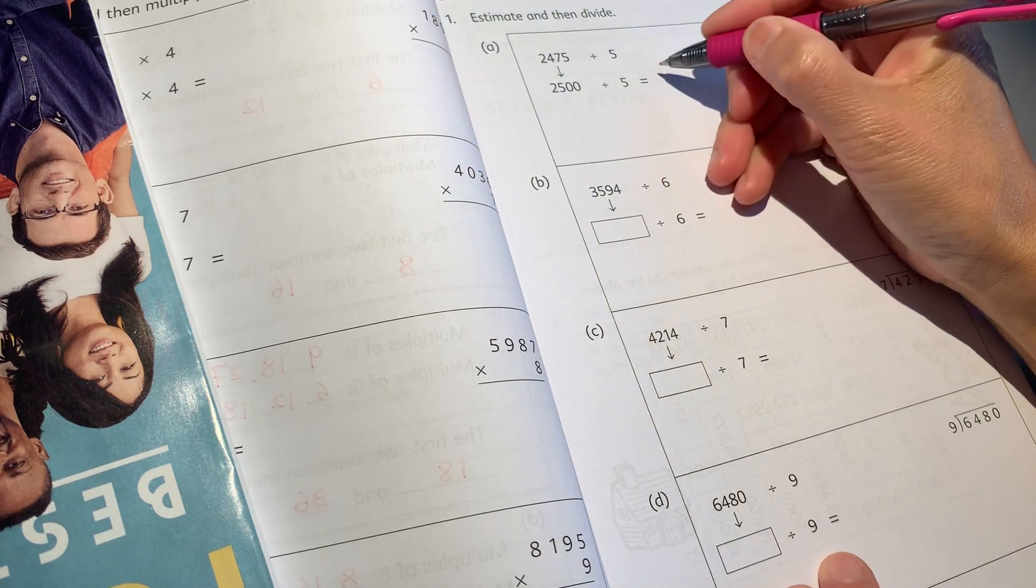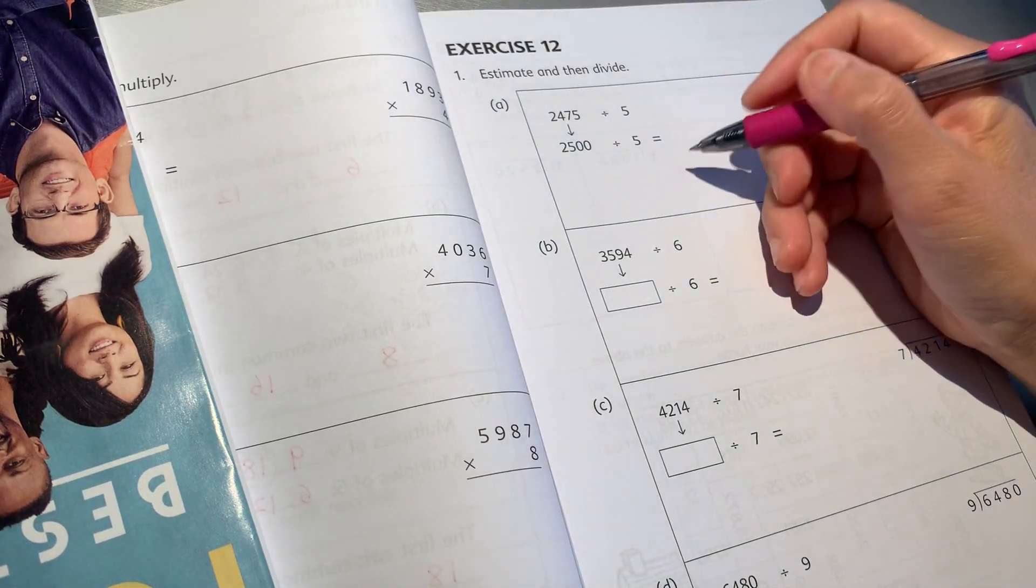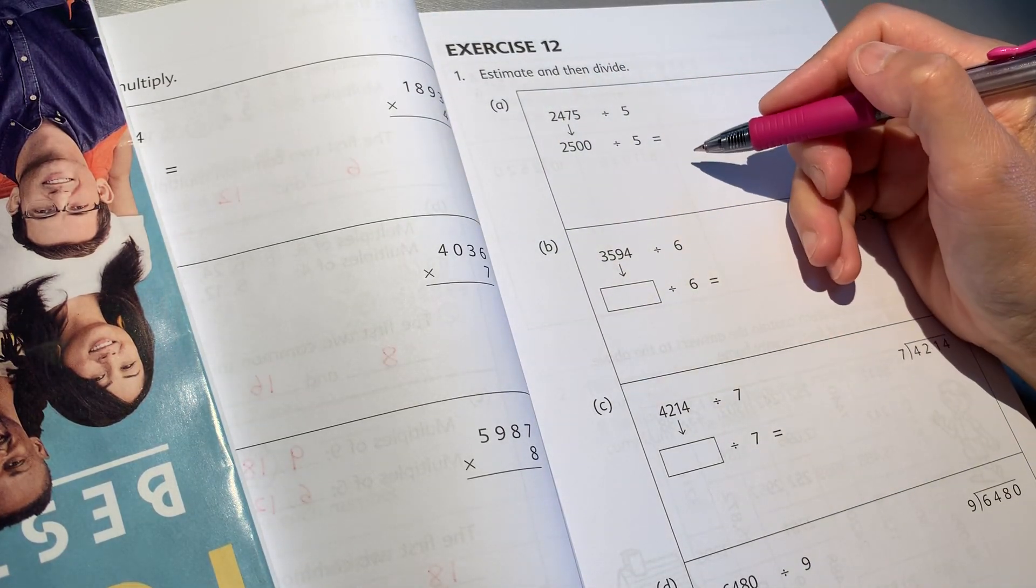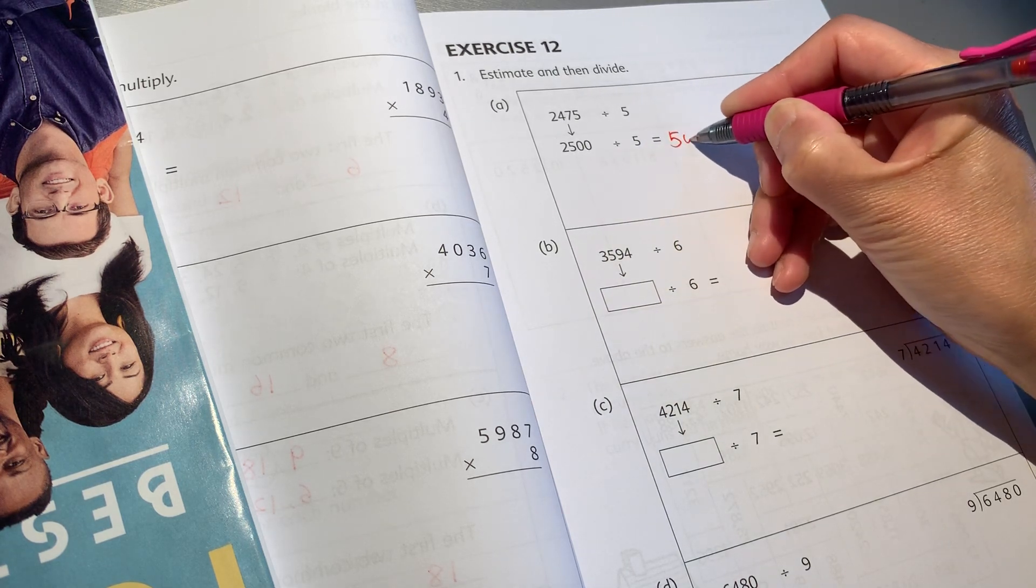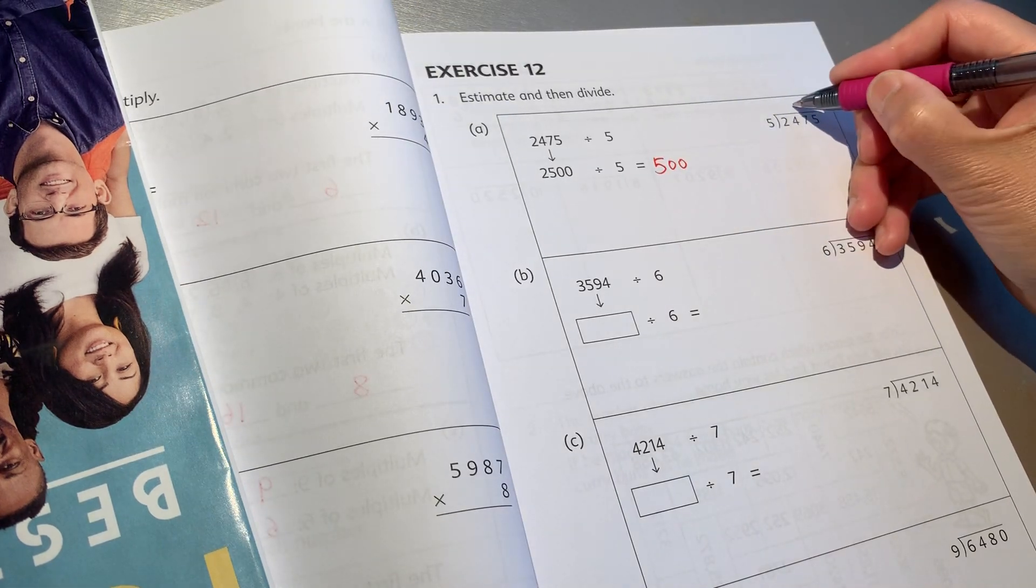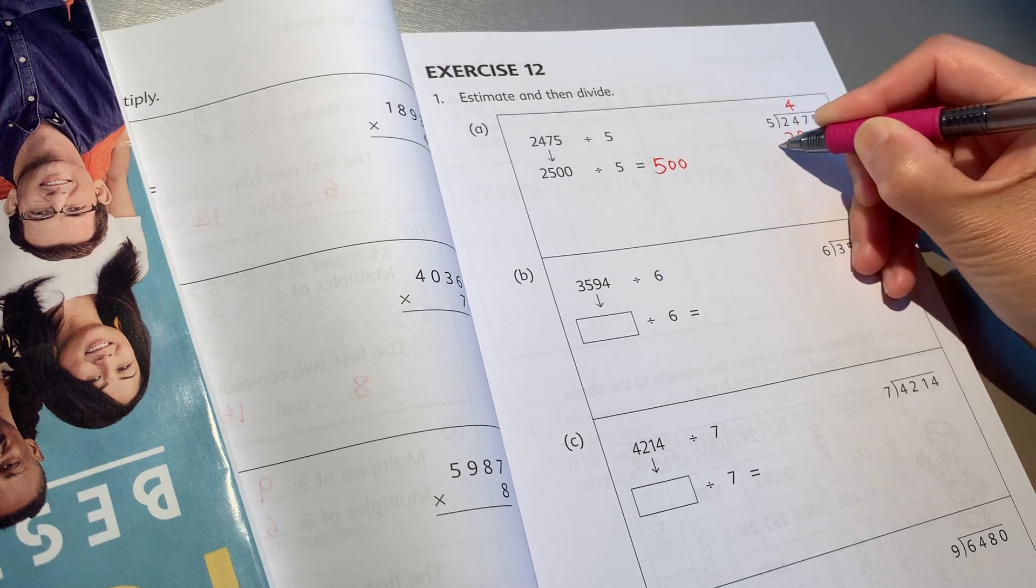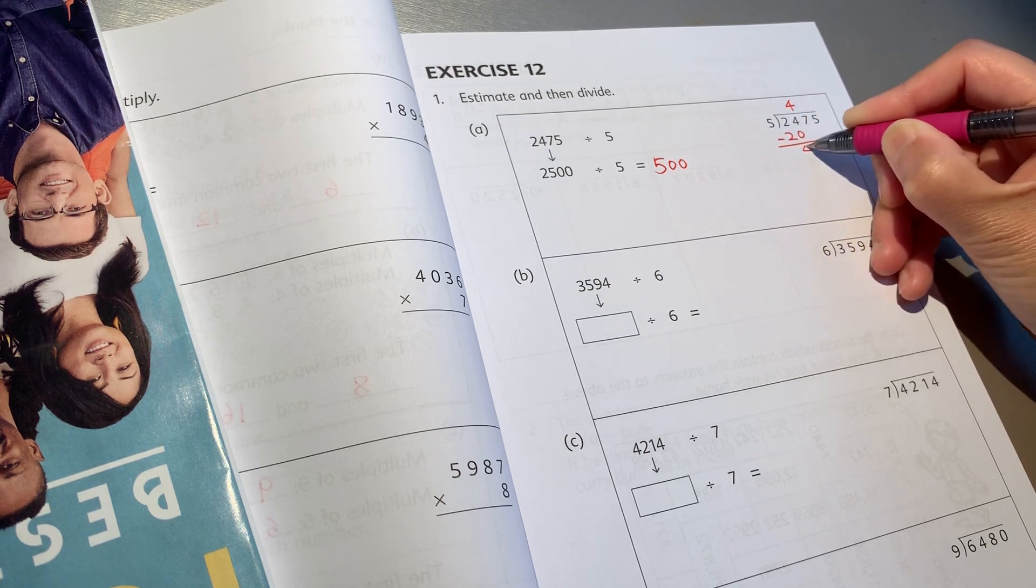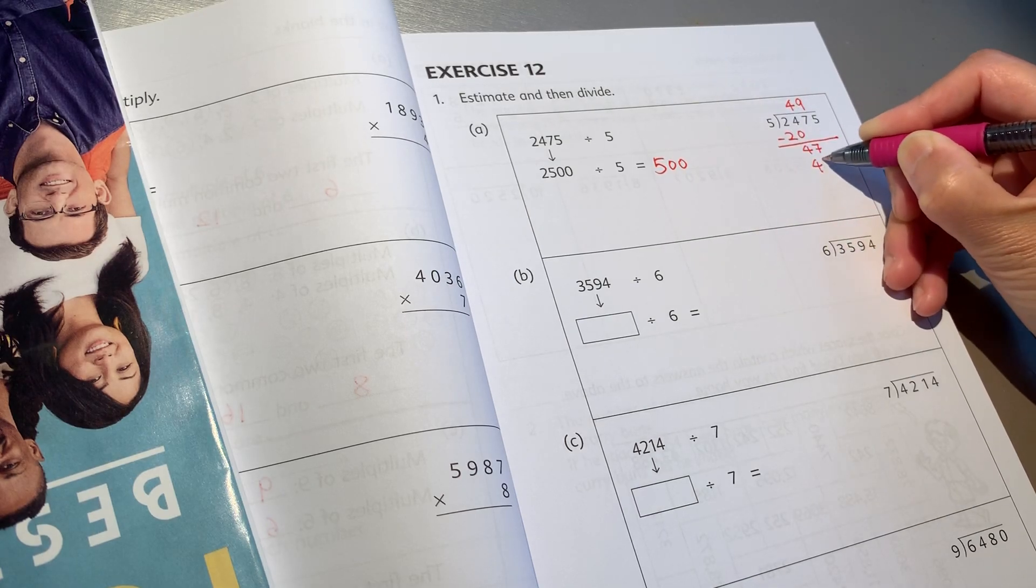先量 estimate and then divide. 等于五 by 这边我们要算. 四五二十, 四十七, 五九, 四十五.